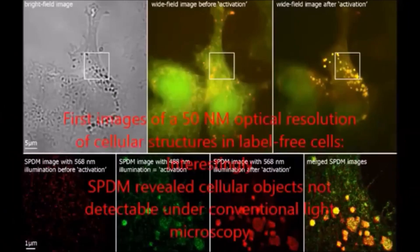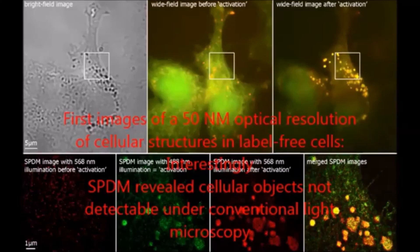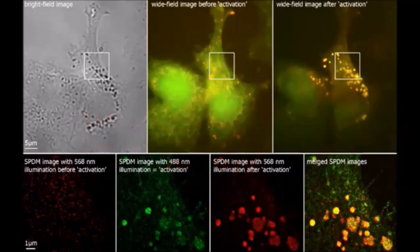Now to come to a conclusion with regard to the theory, we will discuss the work of Rainer Kaufmann, Patrick Müller, Michael Hausmann, and Christoph Cremer, Heidelberg University, published in 2010. Their title of the paper from which the images shown are taken as First Images with 50 nm Optical Resolution of Cellular Structures in Label-Free Cells Using Autofluorescence.